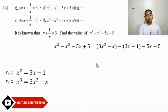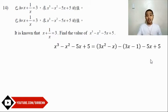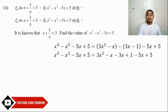Next, I'll simplify this. It becomes 3x² - x - 3x + 1 - 5x + 5.